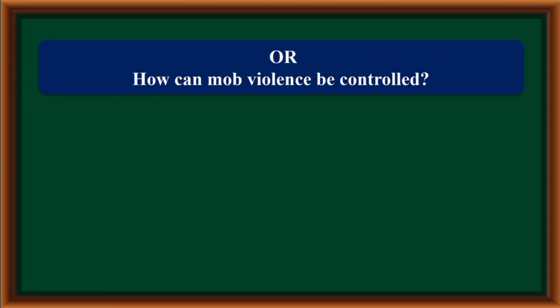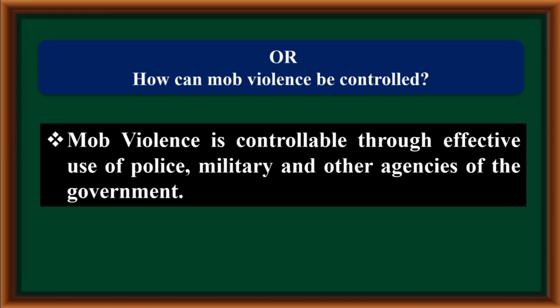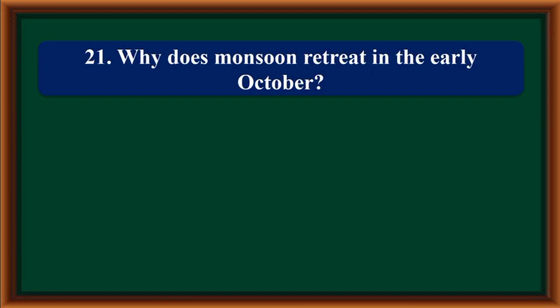How can mob violence be controlled? Mob violence is controllable through effective use of police, military, and other agencies of the government.